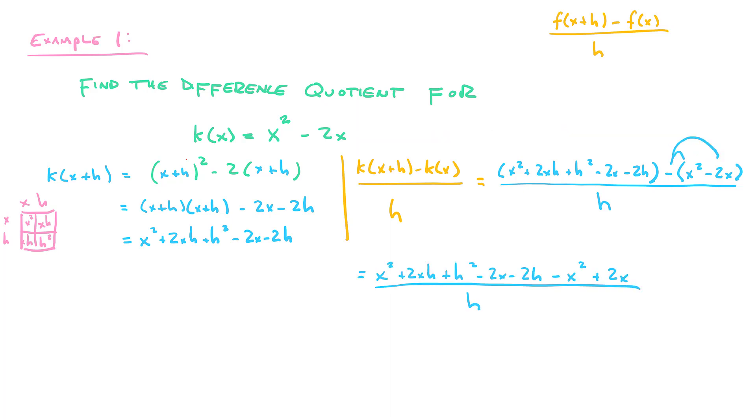So first, I'm going to go ahead and distribute the negative sign to the x squared minus 2x, which turns it into minus x squared plus 2x. And at this point, a whole bunch of stuff is going to cancel. Here is an x squared. Here is a minus x squared. Those are gone. Here is a negative 2x and a positive 2x. So those are also gone. So the only thing that's left in the numerator is 2xh plus h squared minus 2h, which is really good, because that means that everything in the numerator and the denominator all have an h in common.